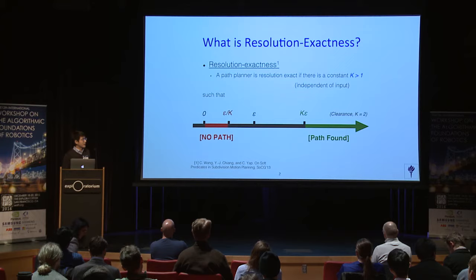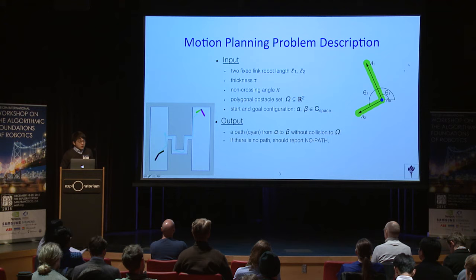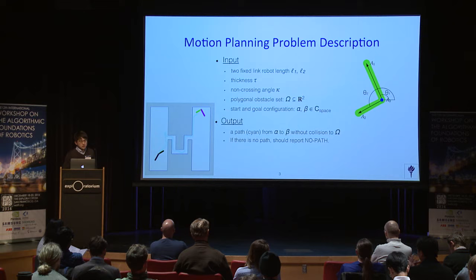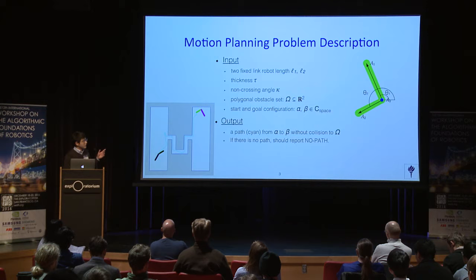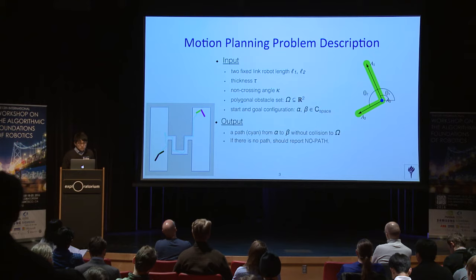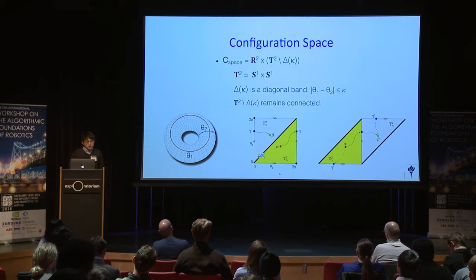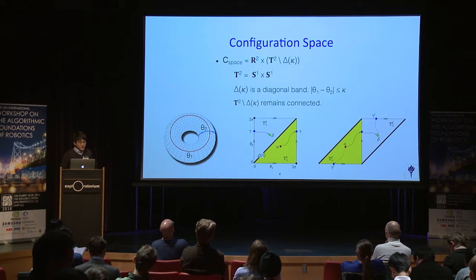Here is our problem input. Our angle representation is based on the joint, and there is a non-crossing angle constraint kappa. For the output part, if the path does not exist, it will report no pass. Our configuration space has two components: one spatial and one angular. The angular part excludes certain angles under the non-crossing constraint.